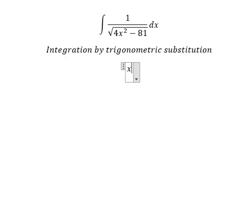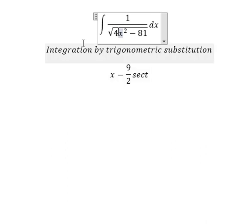I will put x equals 9/2 secant of t. Because if I put this one here, we have 81/4 secant squared t. We can do factorization: secant squared t minus 1, we change for tan squared t.